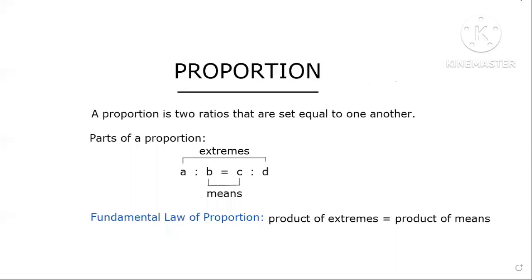Let's start with the definition of a proportion. A proportion is two ratios that are set equal to one another. Now, what are the parts of a proportion? We have the extremes and the means. The extremes are the outermost part of the equation — these are a and d — and the means are the innermost part of the equation, which are b and c.